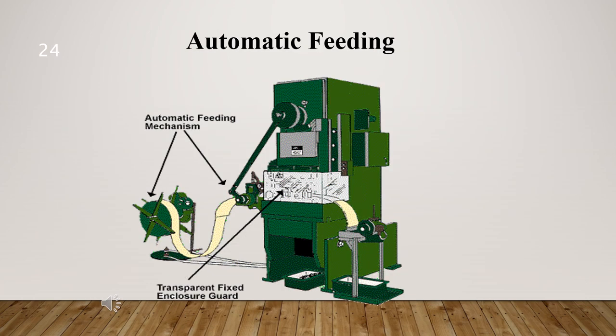In this part, we will discuss automatic feeding mechanisms. Automatic feeds reduce the exposure of the operator during the work process, and sometimes do not require any effort by the operator after the machine is set up and running. Notice the transparent fixed enclosure guard at the danger area of this power press with an automatic feeding mechanism.